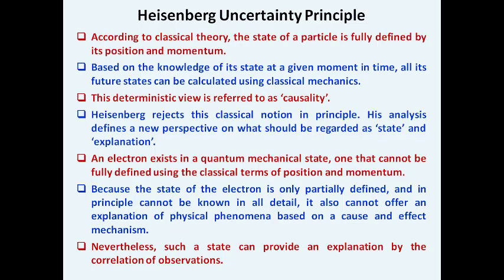According to classical theory, the state of a particle is fully defined by its position and momentum, and based on knowledge of the state at a given time all future states can be calculated using classical mechanics. This deterministic view is called causality. However, Heisenberg totally rejects classical notions; his analysis defines a new perspective on what should be regarded as state and explanation, as an electron exists in a quantum mechanical state that cannot be fully defined using the classical terms of position and momentum.